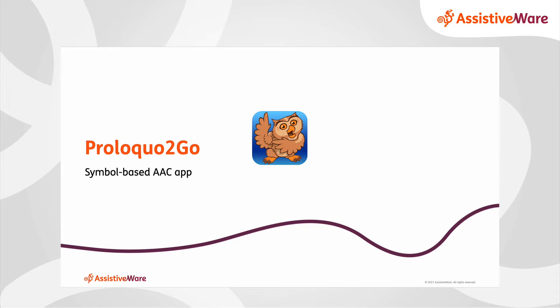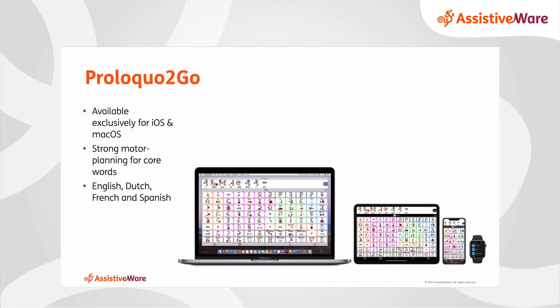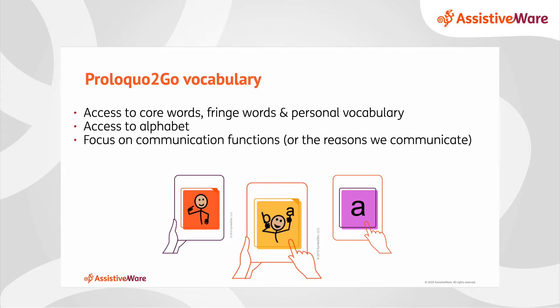It has words represented by symbols for people who have not yet learnt to read or spell, or for those that need the visual supports that a picture or a symbol might provide. It is designed to support motor planning, and it's available in English, Spanish, French, and Dutch. The vocabulary in Proloquo2Go is based on core words with quick access to fringe words and personal vocabulary, as well as access to the alphabet.